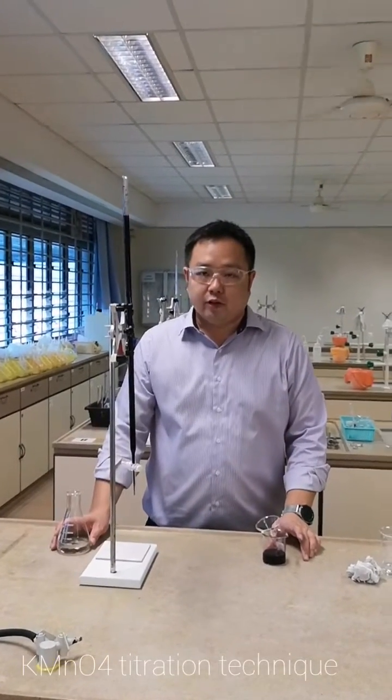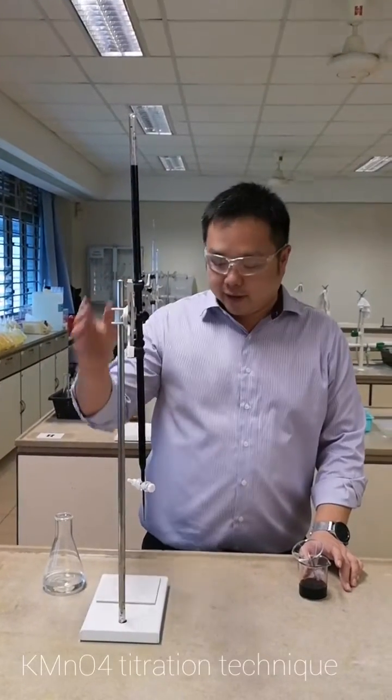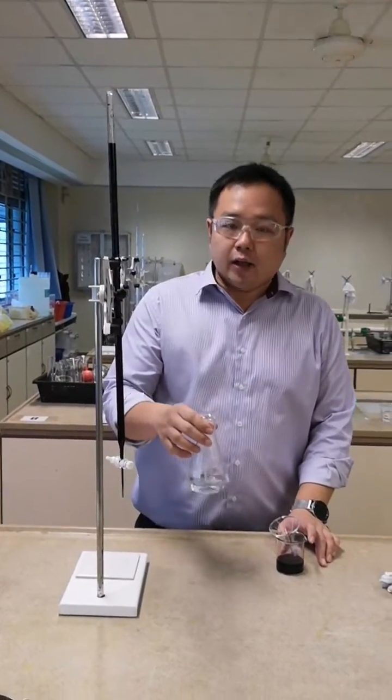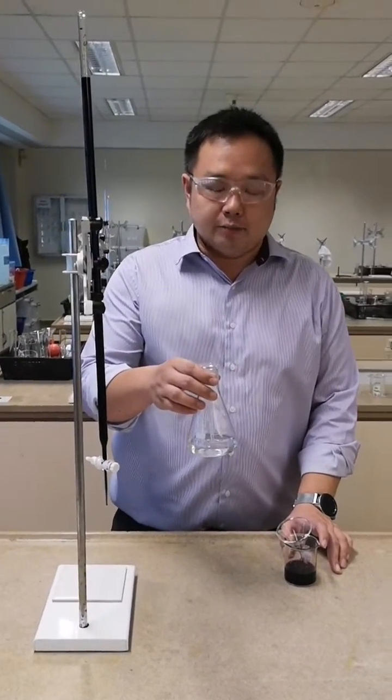Today we are going to do a titration with potassium permanganate. In the burette, we have some potassium permanganate. In the conical flask, we have an aliquot of hydrogen peroxide acidified with dilute sulfuric acid.